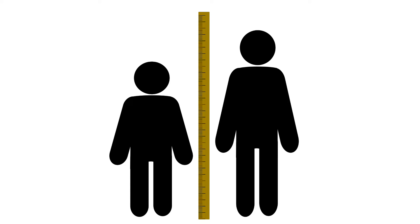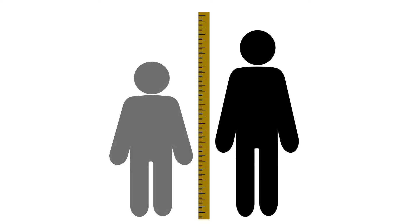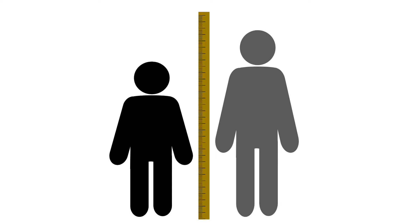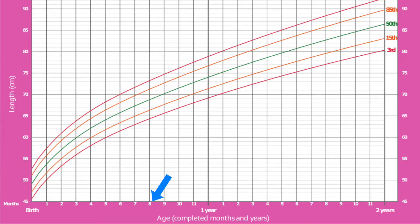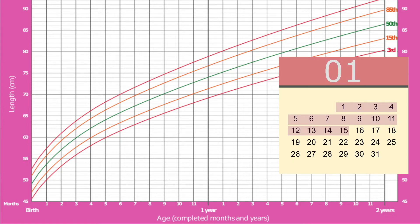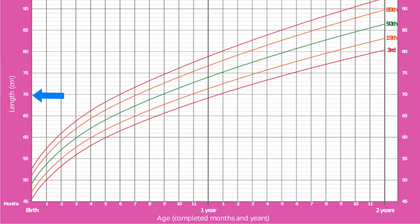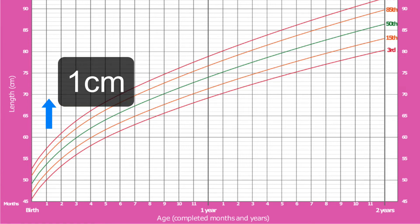The length for age indicator can help identify children who are stunted or short, who might have had prolonged undernutrition or repeated illness. Children who are tall for their age can also be identified. In these charts, the horizontal reference line at the bottom is the x-axis, which shows age plotted in weeks and months from birth until 2 years. The vertical reference line on the left is the y-axis, showing length in centimeters. The thin gray horizontal lines represent an increase in length by 1 centimeter.